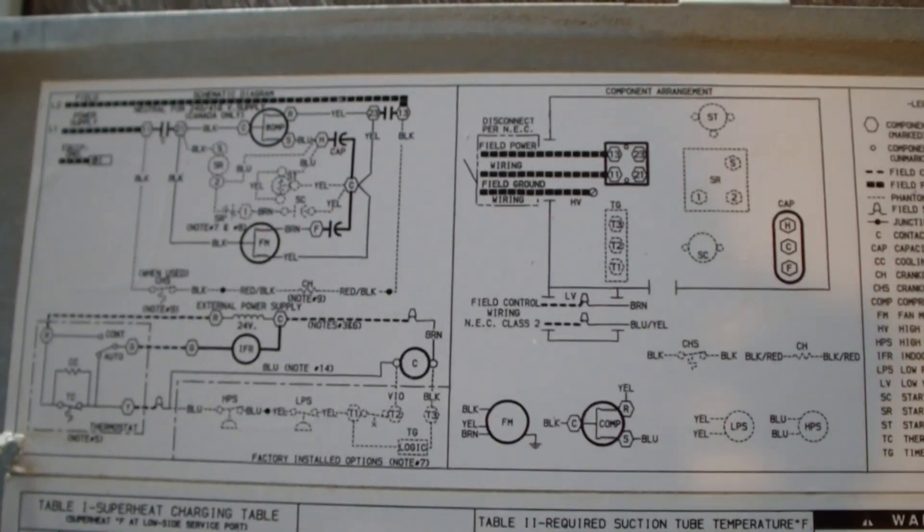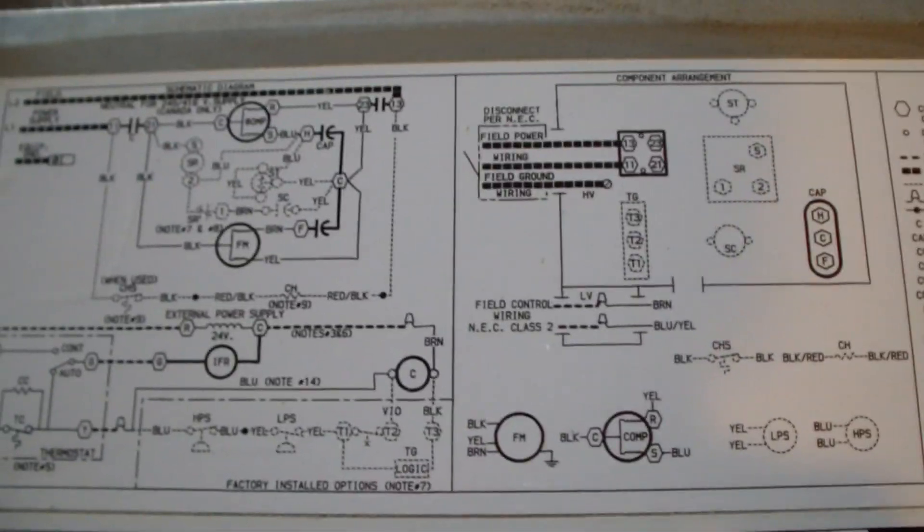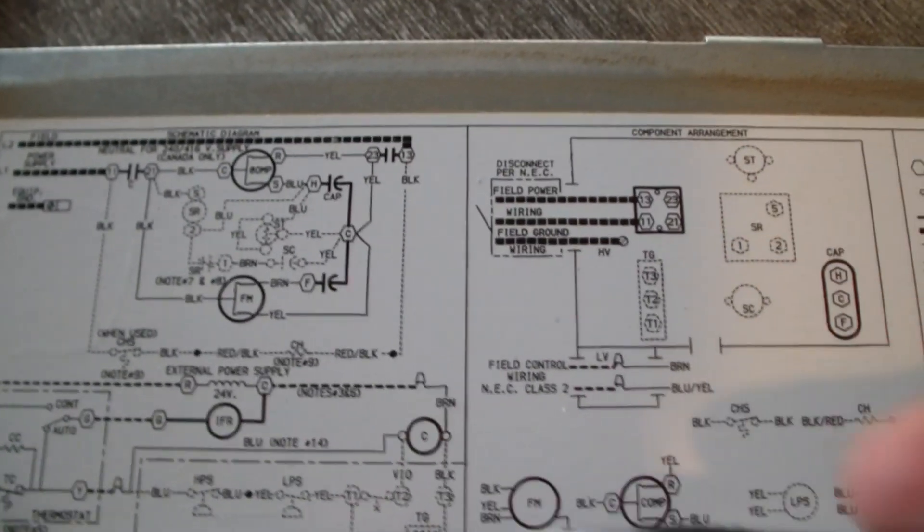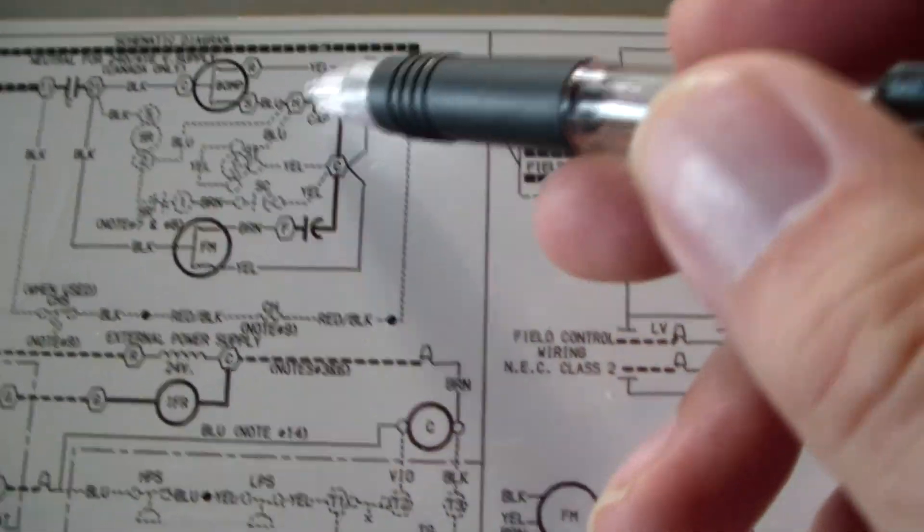Here's the schematic that was on the inside door. Let's take a look at this thing and see if we can figure out what's going on. Remember that big mess, that universal capacitor with all those things on there? Let's take a look. Here's the capacitor they show here - they show a dual capacitor.